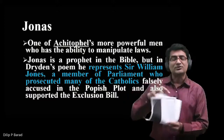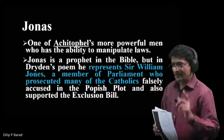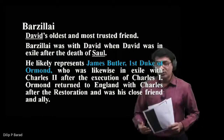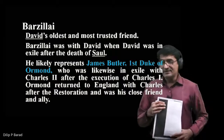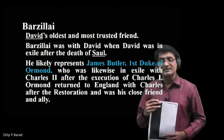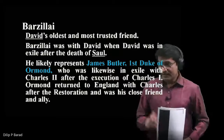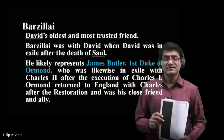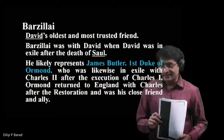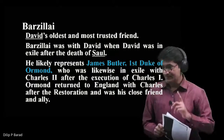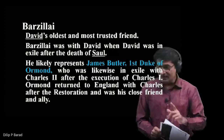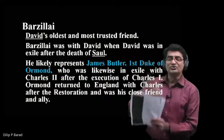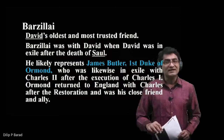Barzillai is David's oldest and most trusted friend, who was with David during his exile after the death of Saul. Barzillai likely represents James Butler, the first Duke of Ormond, who was likewise in exile with Charles II after the execution of Charles I. The Duke of Ormond returned to England with Charles II after the Restoration and was his close friend and ally.